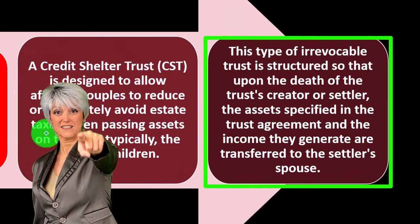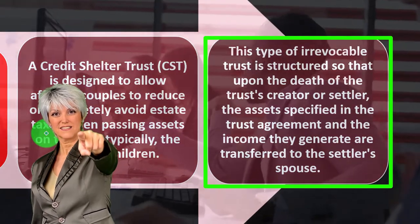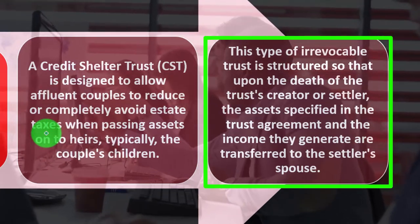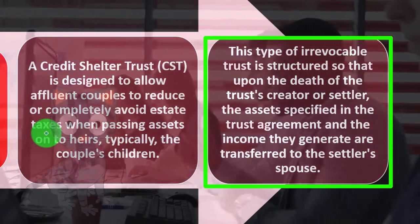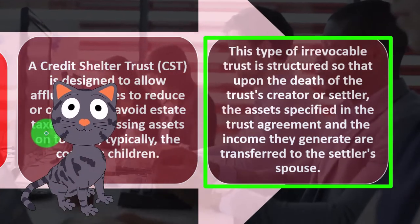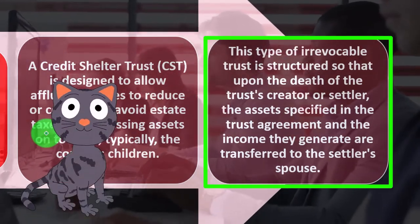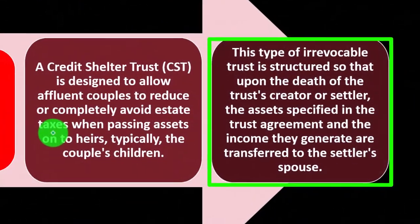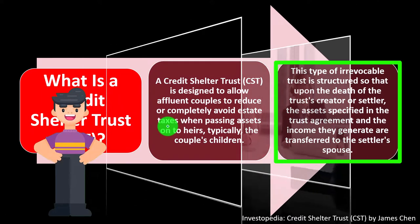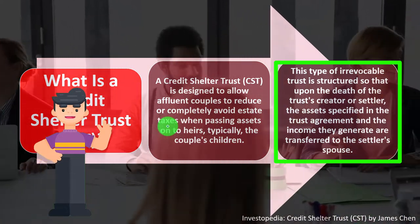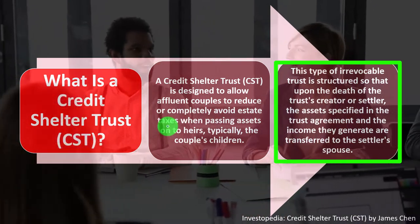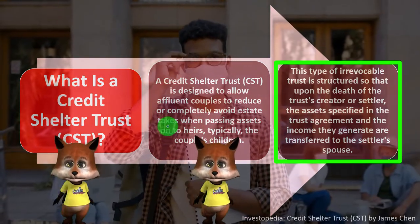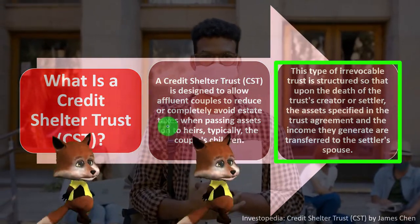Trusts are similar to a corporation in that they are a separate legal entity — an entity in and of themselves — which has characteristics we typically apply to human beings, such as the capacity to own property. This has useful applications for estate planning: setting up a trust can make the probate process easier, and in more complex estate planning, putting money into a trust can help reduce estate taxes.